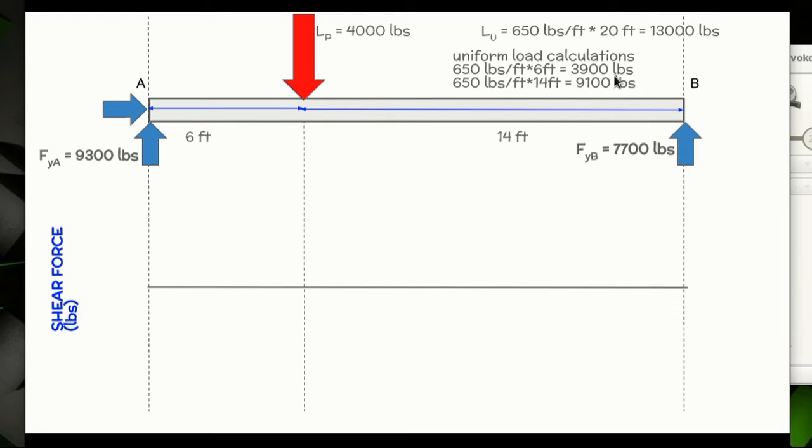Something else we need to know before we continue is how many pounds is each section. At 6 feet, 650 times 6 equals 3,900 for this section, and 650 times 14 equals 9,100 for this section. At this point we understand all of the forces and weights of this system.